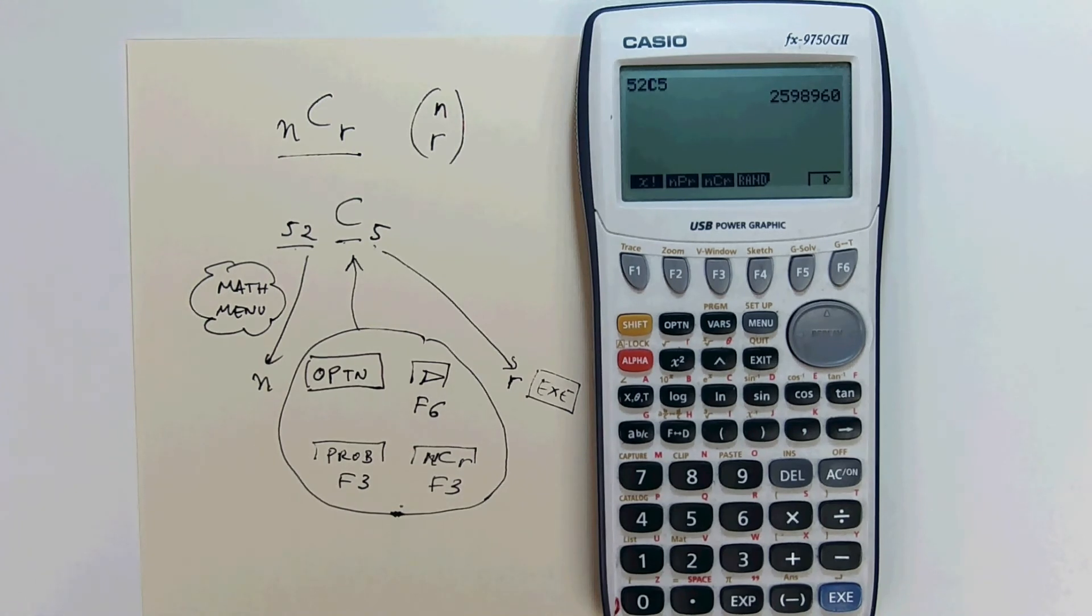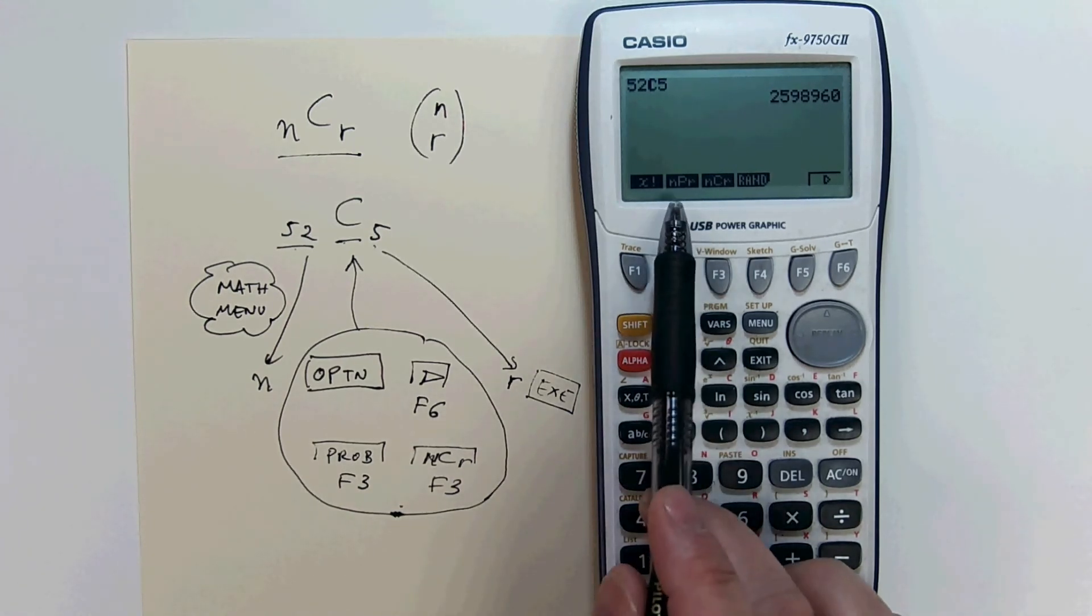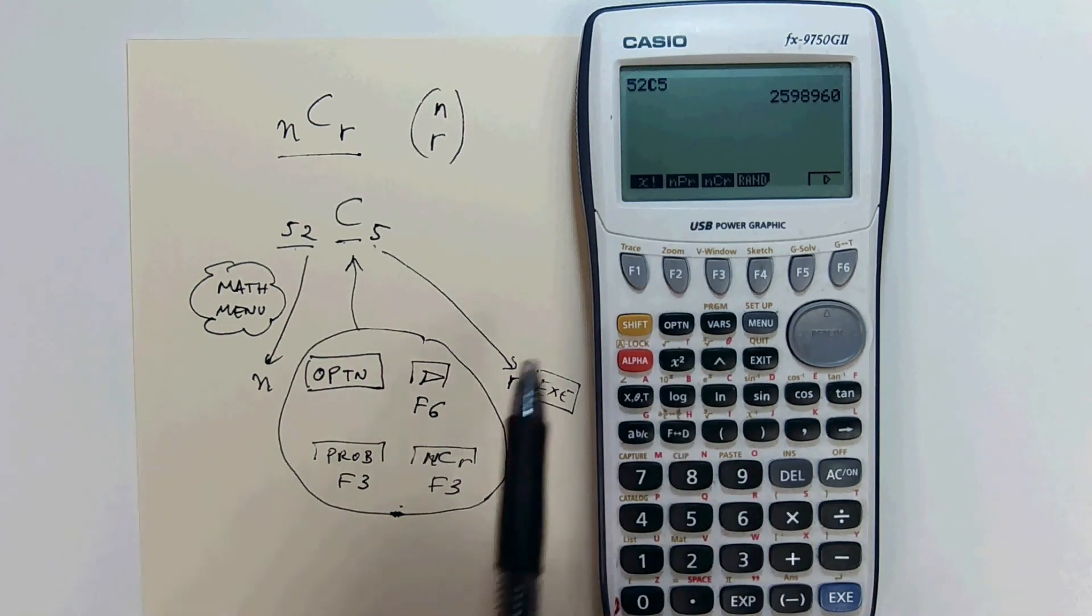Using the same steps, you could hit F2 for NPR number of permutations or F1 for factorial.